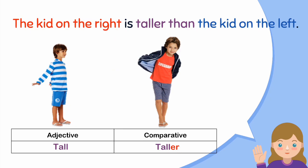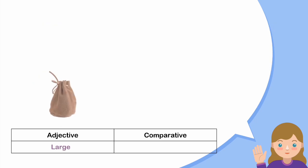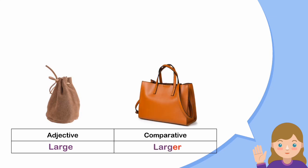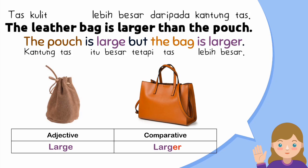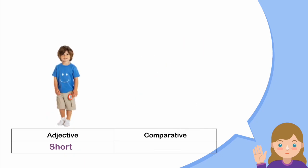Next: 'large' (besar) → 'larger' (lebih besar). Lihat, 'large' kita tinggal tambahkan -r di belakangnya menjadi 'larger'. Contoh kalimatnya: The pouch is large but the bag is larger. Atau: The leather bag is larger than the pouch.